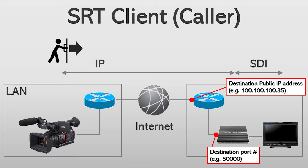Just as a side note, in this configuration I set port forwarding on the destination side router. More specifically, the router in the destination network forwards the streaming that comes to port 5000 to the receiver, which has a private IP address in the destination network.